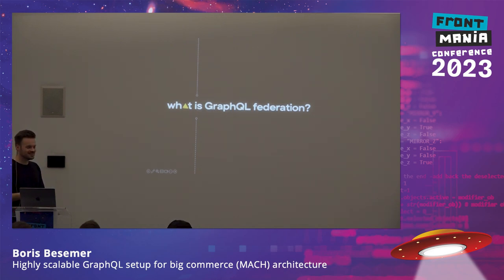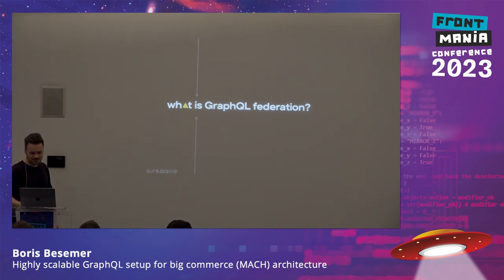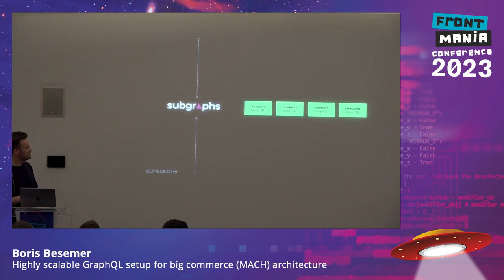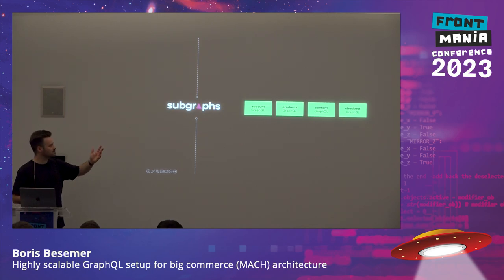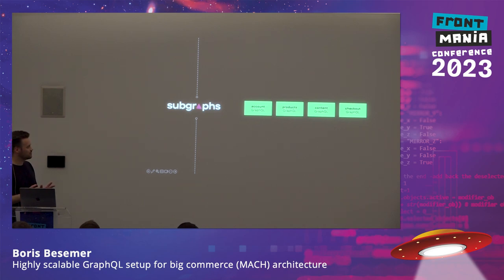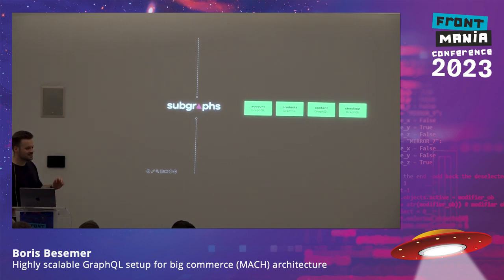GraphQL Federation actually exists of subgraphs, and subgraphs are actually GraphQL servers. In this example, we have account, products, content, and checkout — each of them are their own complete GraphQL servers. You can create them individually; they might be running in their own Docker container, Lambda function, or just by running node index.js. That means four GraphQL endpoints, all running independently from each other.